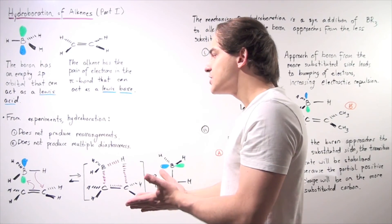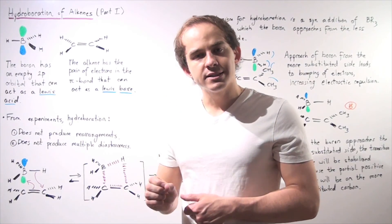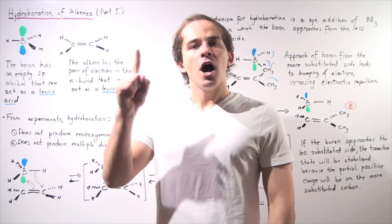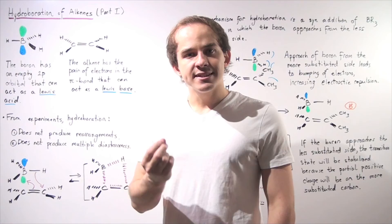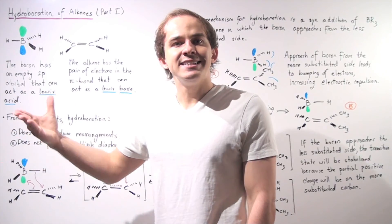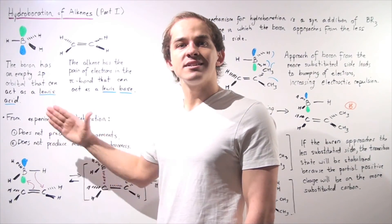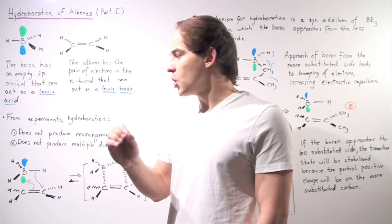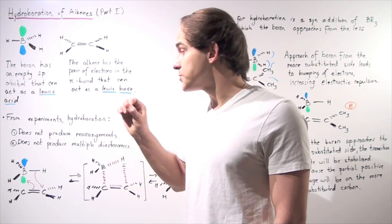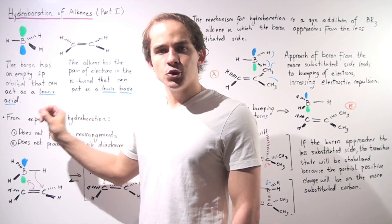Number one implies that we can't have a carbocation intermediate, because carbocation intermediates lead to rearrangements. So that means number one implies we should have a one-step mechanism — a concerted mechanism. Number two implies that we should have syn-addition and not anti-addition. Anti-addition will produce diastereomers, while syn-addition will produce only one of those diastereomers. Since that's exactly what we observe from experiment, our mechanism for hydroboration should include these two points.